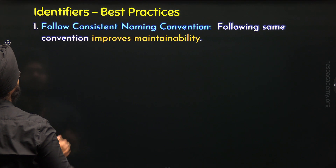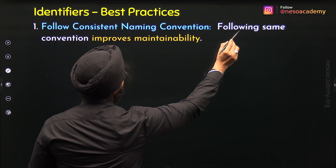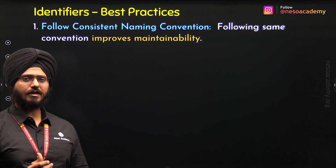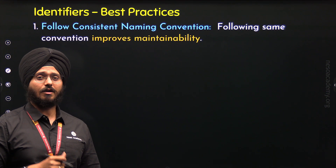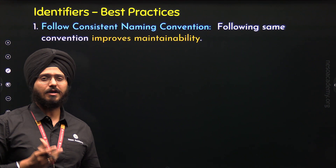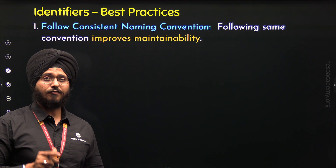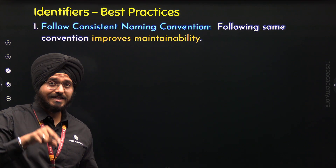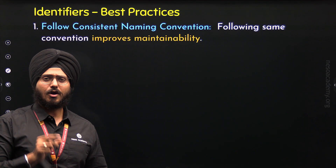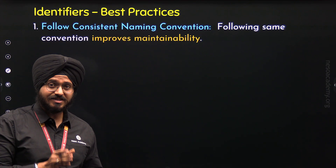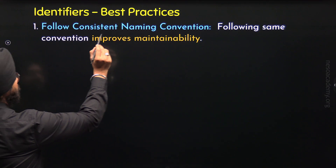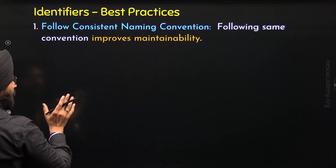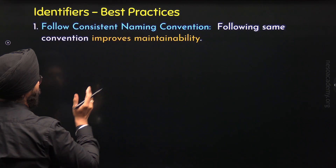The first best practice is: follow consistent naming convention. Following the same convention improves maintainability of the code. If we follow the same convention for a specific entity in our code, it will improve the maintainability. By maintainability, I mean that if you or someone will see your code in future, they will be able to identify different parts of the code very easily, because you have followed a consistent naming convention.